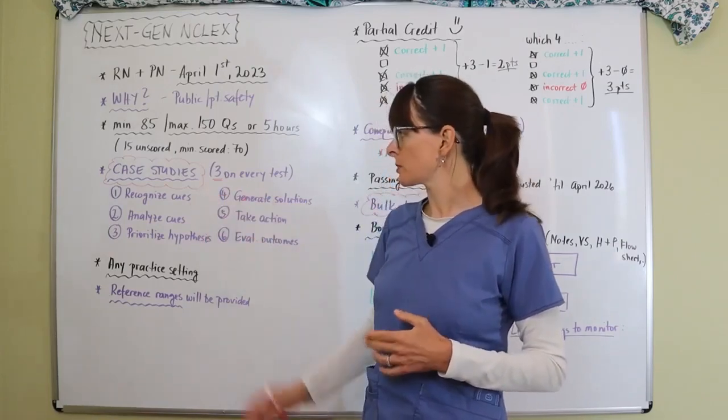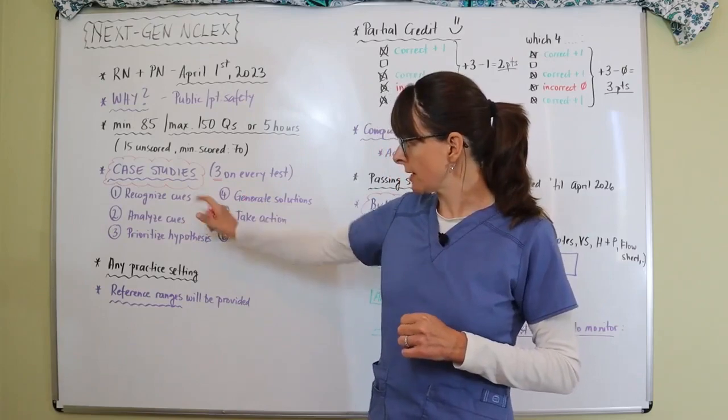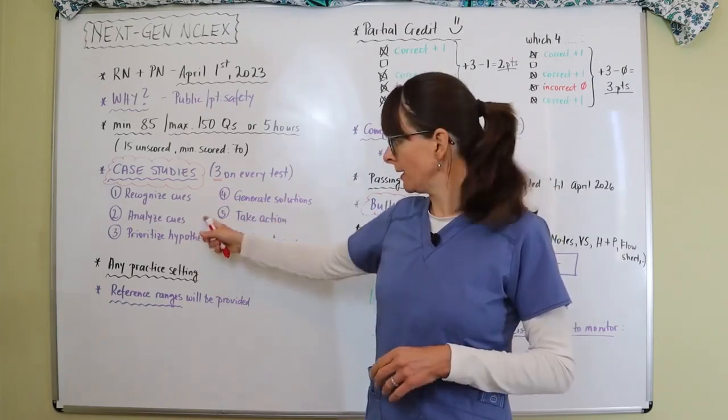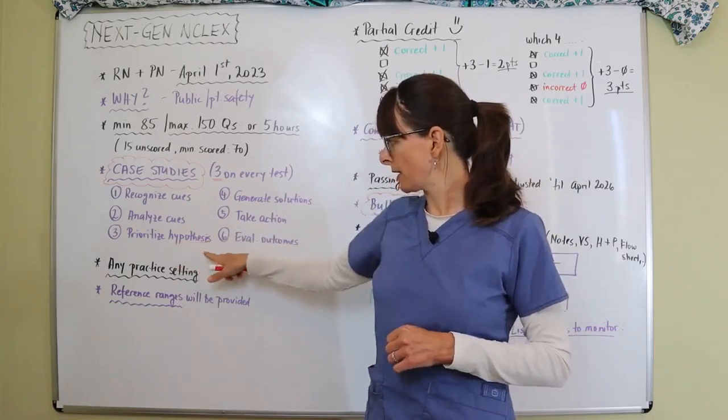And they've divided them into six sections, and they're always going to follow in this order, which means recognizing cues, analyzing these cues or the data given, and prioritizing hypotheses.